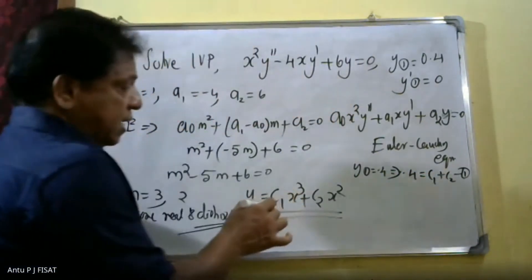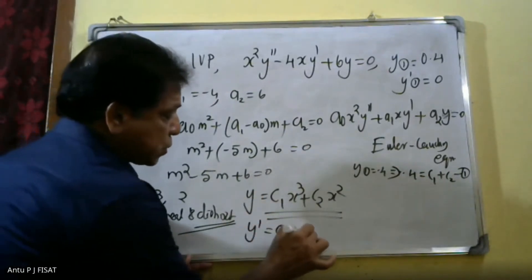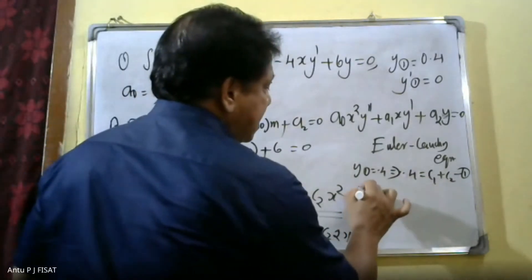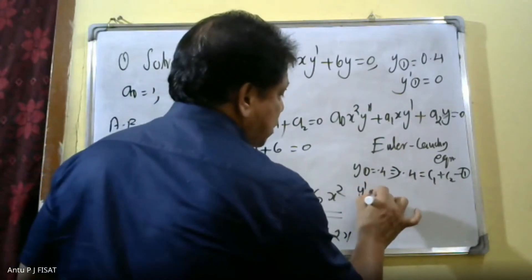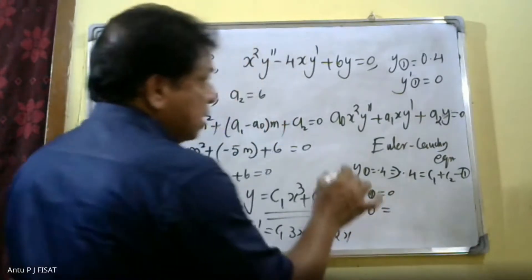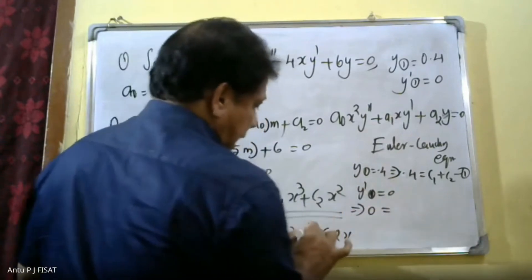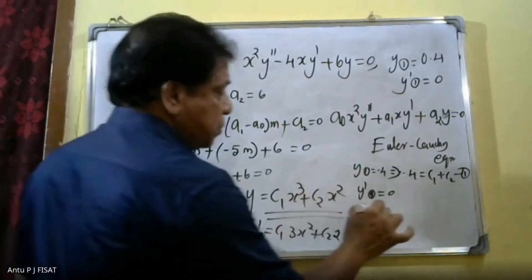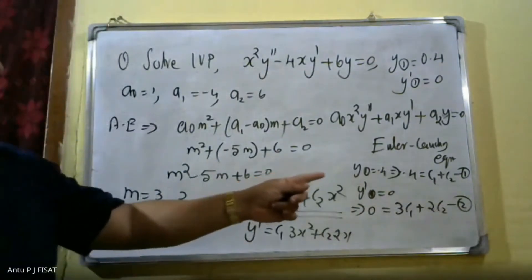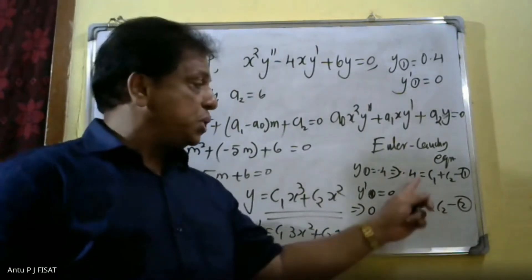For the second equation, we compute y' = 3c₁x² + 2c₂x. Applying y'(1) = 0: substituting x = 1 gives 0 = 3c₁ + 2c₂. This is equation 2. We now have two equations: c₁ + c₂ = 0.4 and 3c₁ + 2c₂ = 0.